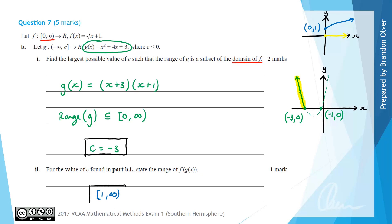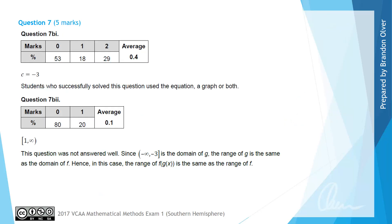From the examiner's report, 29% of students got part b(i) correct, and students who successfully solved it often used an equation, a graph, or both to support their working. For part b(ii), 20% of students got this question correct, and overall it was not answered well. The examiner notes that since negative infinity to negative 3 is the domain of g, the range of g is the same as the domain of f, and hence the range of f of g of x is exactly the same as the range of f — so 1 to infinity was the correct answer.